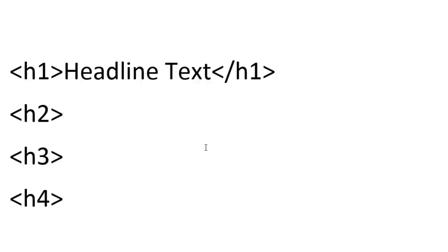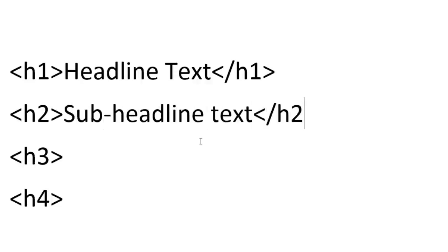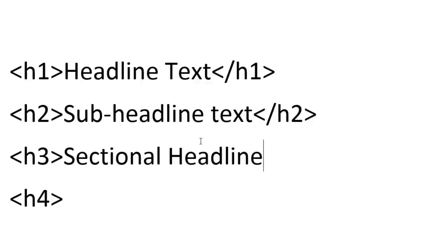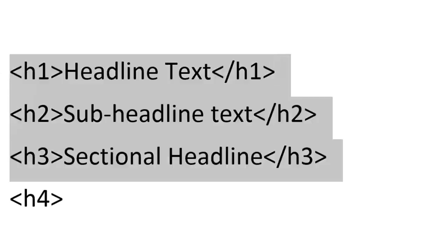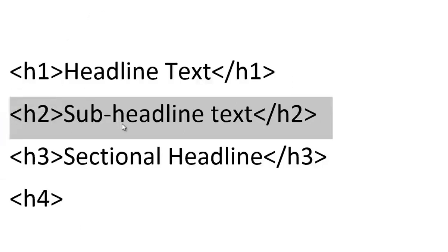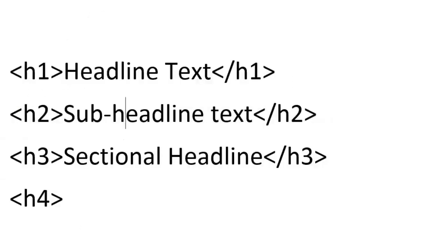You would do the exact same thing: this could be a sub-headline text closed with slash h2, and this could be a sectional headline closed with h3. As the number gets bigger, the heading gets smaller, but it's still a headline. Now when Google comes along and reads these headlines, it says this is a headline, this might be not as important as this headline. We don't know exactly, but that's what we've seen.